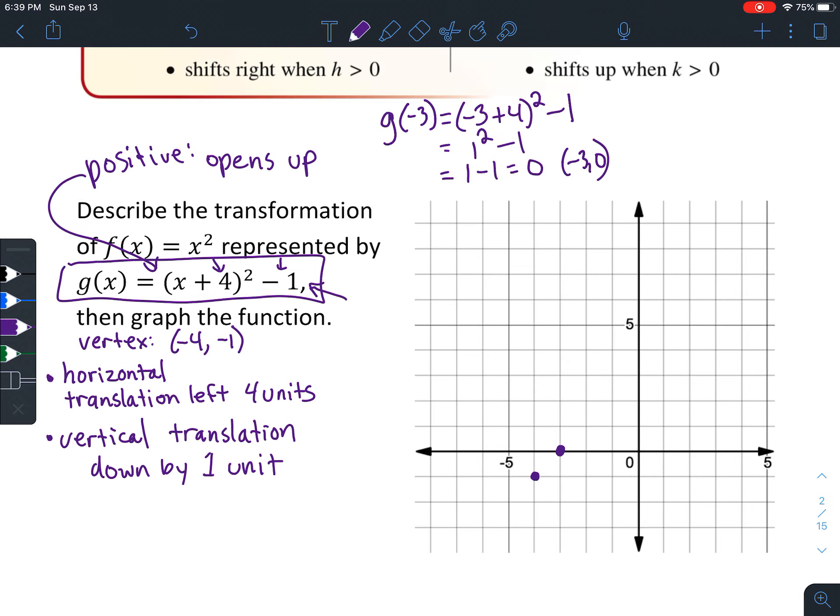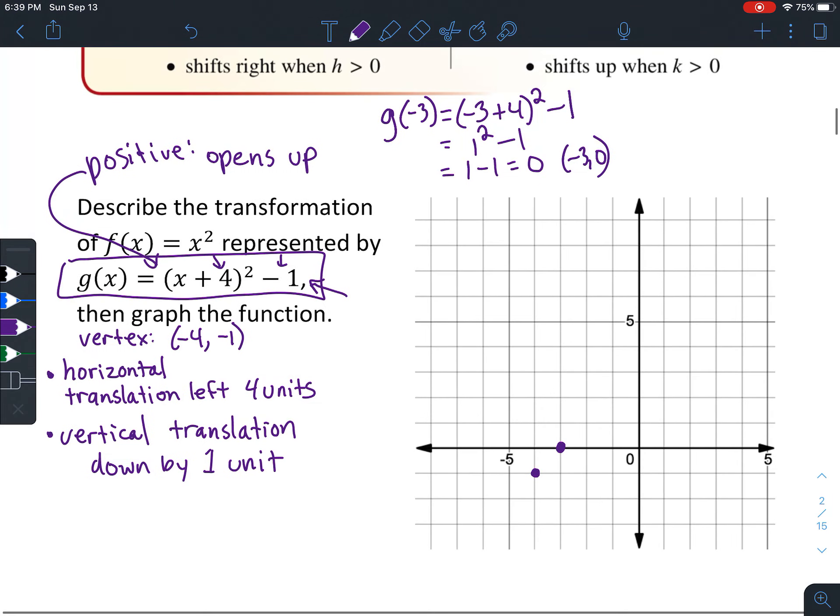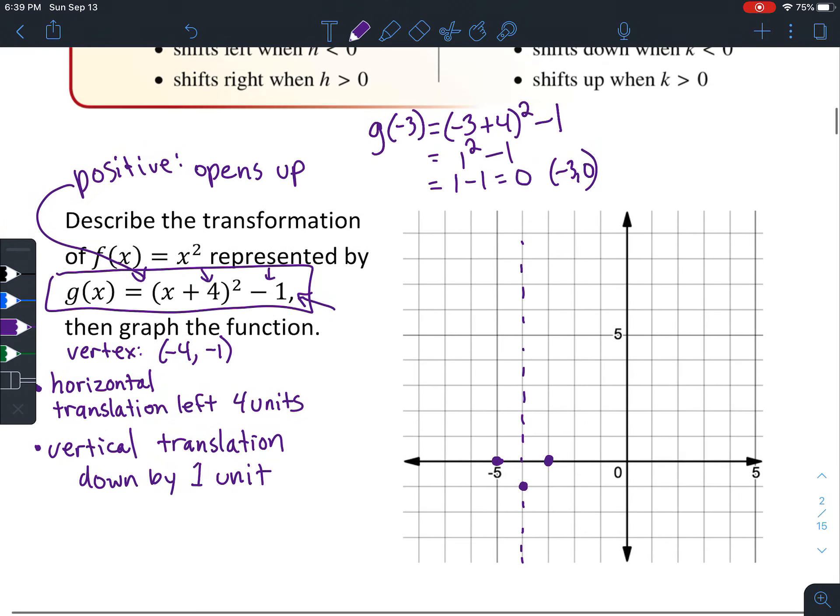So you're going to go left 3 and up 0. And parabolas, we're going to talk a little bit more about this over the next few days, but parabolas are symmetrical. So if you have one point there, then you also have a point right there. This is our little mirror image right here in the middle. It's called the axis of symmetry.